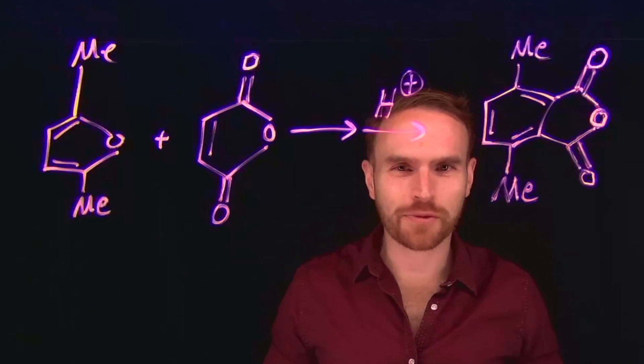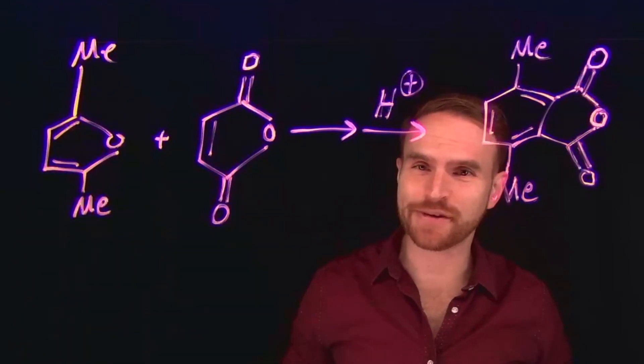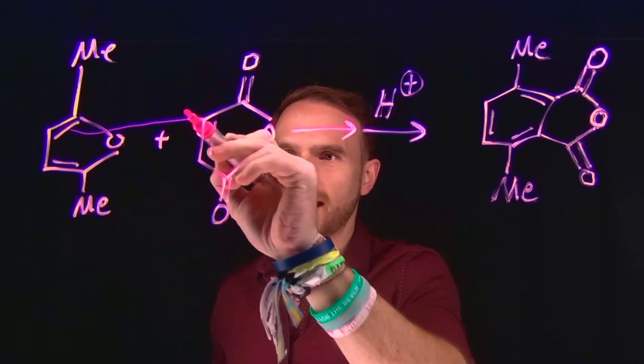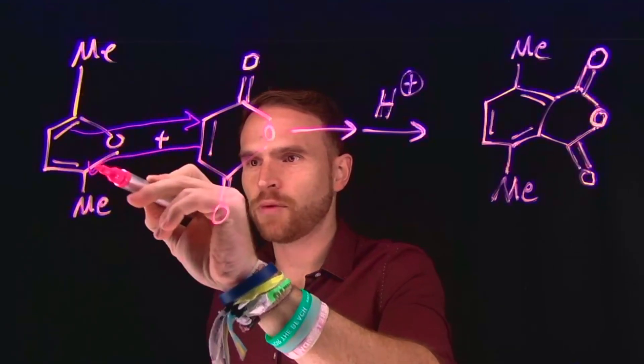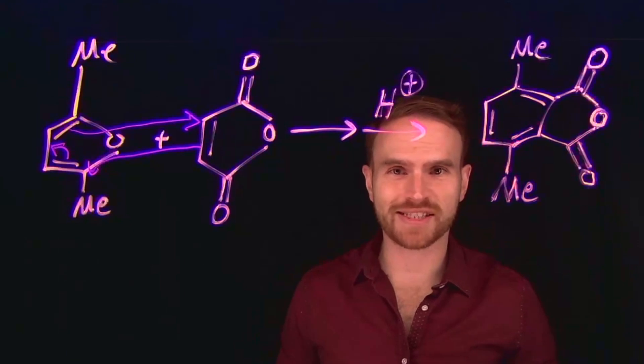In this chemical transformation, the first thing that you should notice is that we have a diene and a dienophile, which means that the likely first step is going to be a Diels-Alder reaction, where the electrocyclic pathway can proceed in order to form our bicyclic fused ring system.